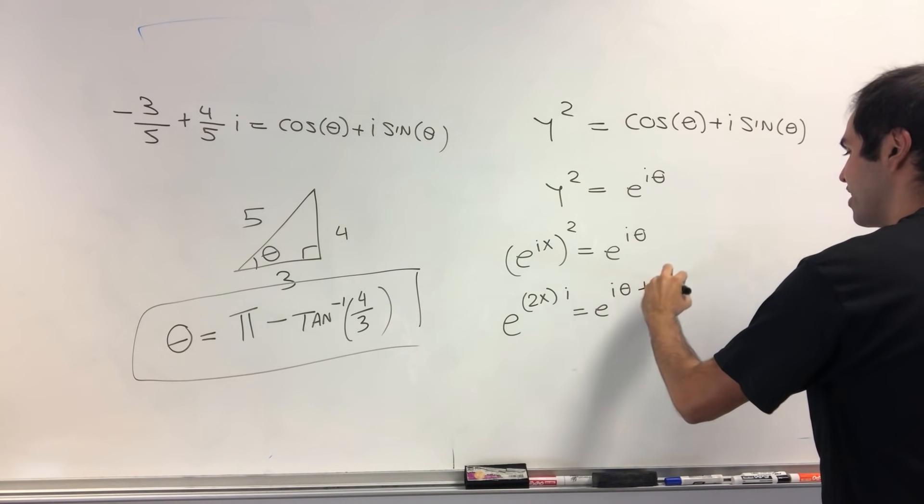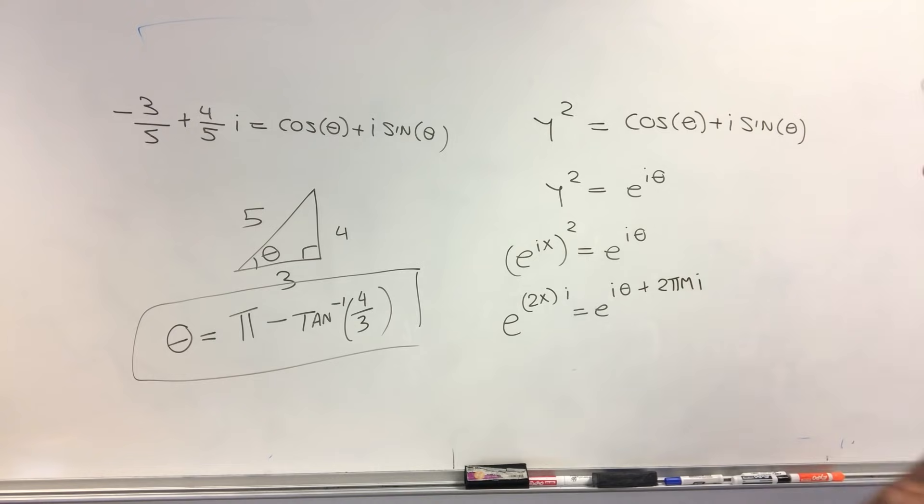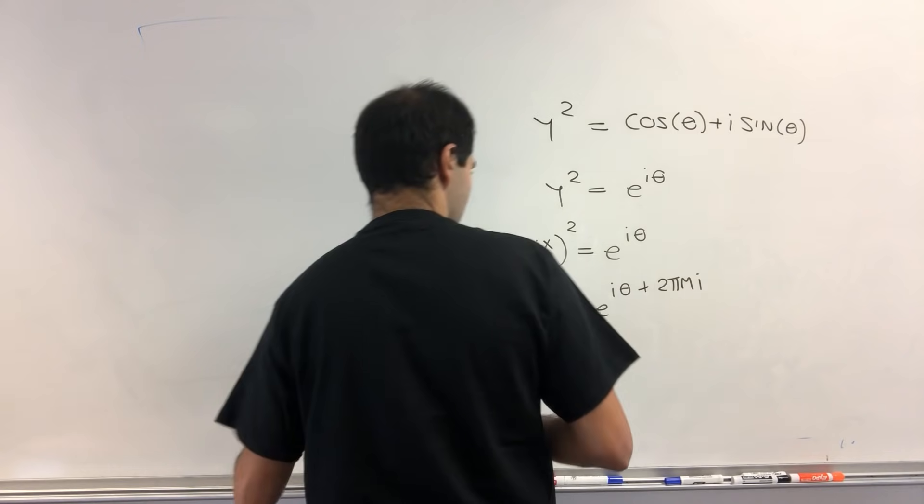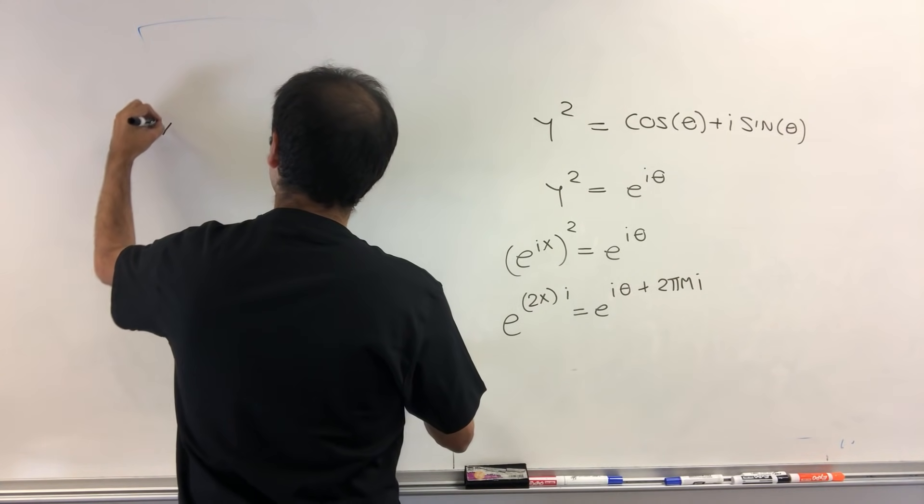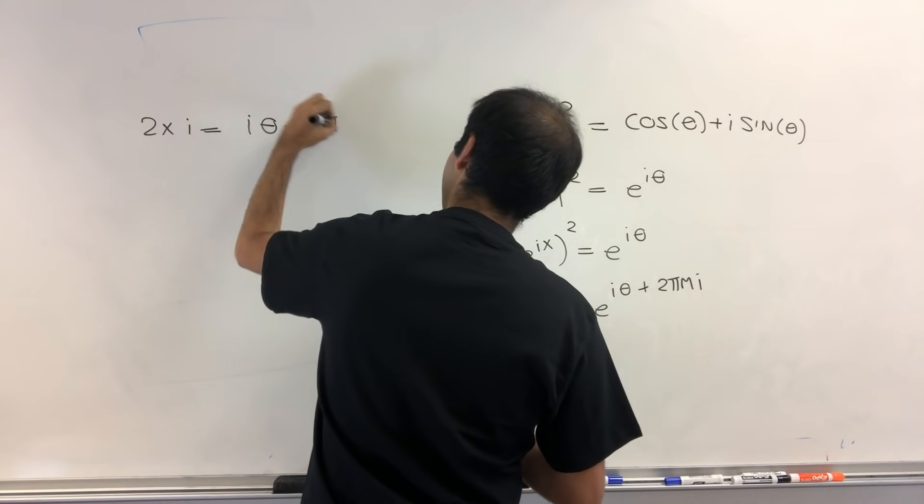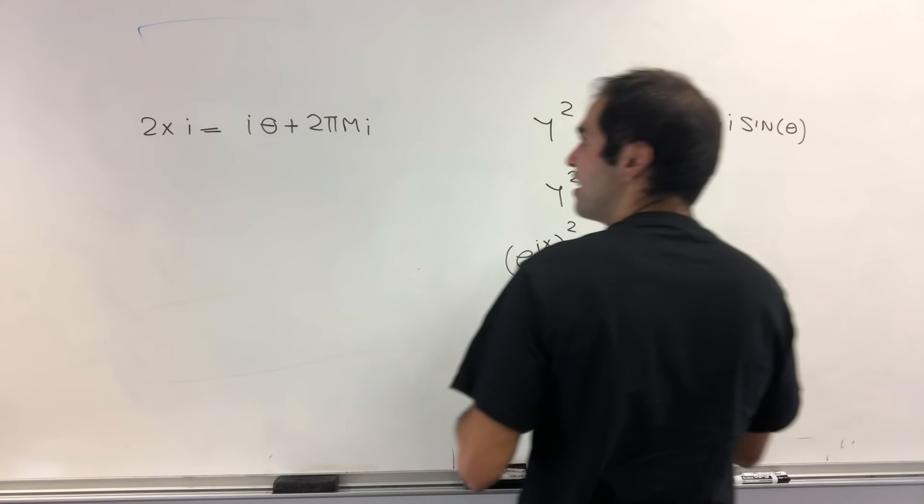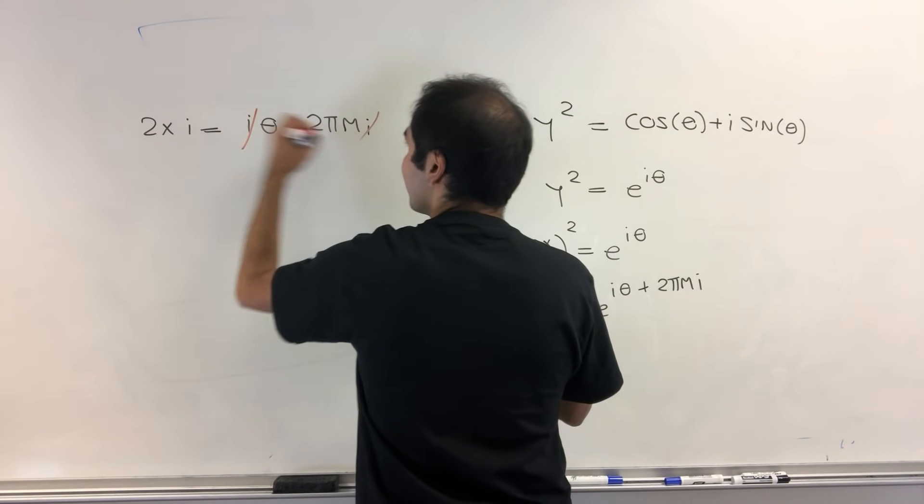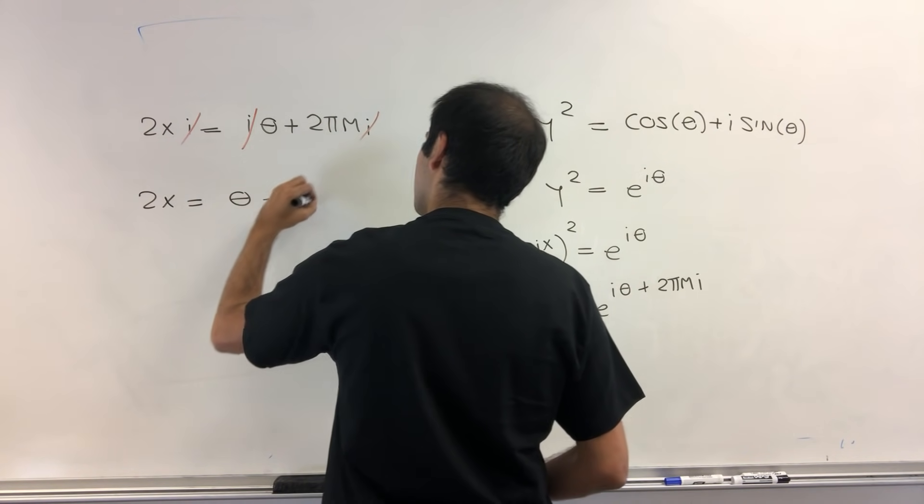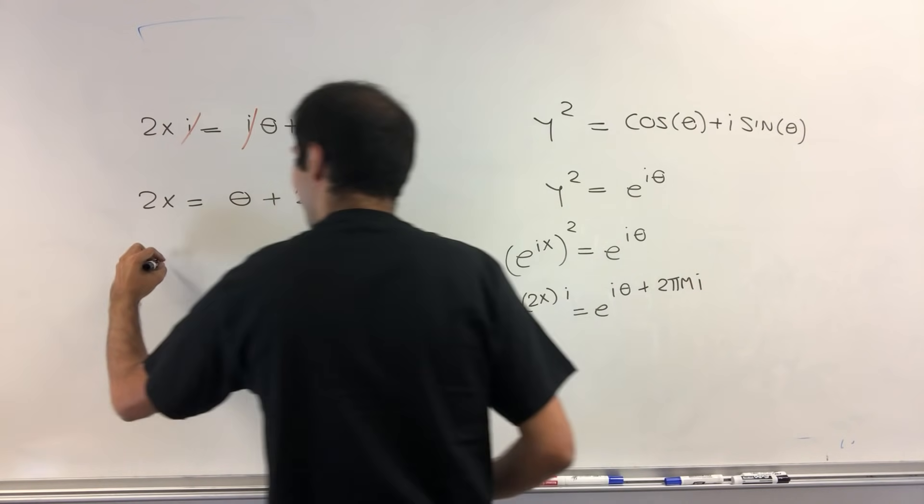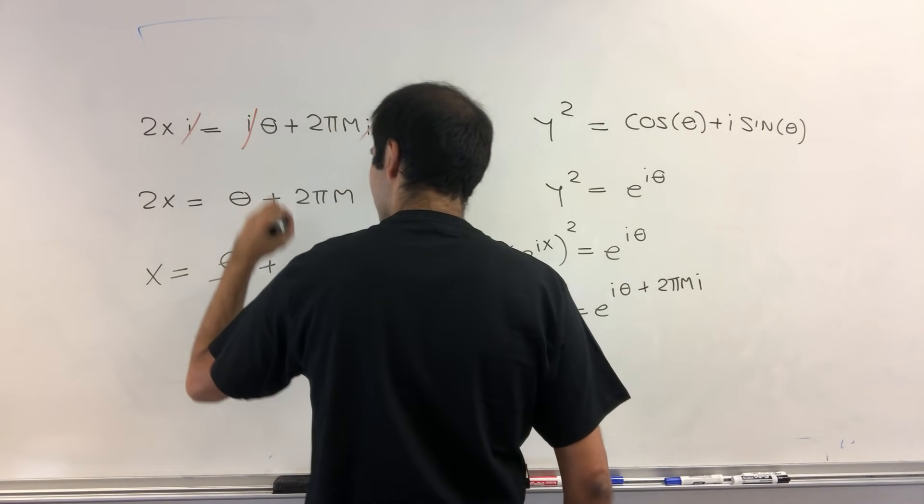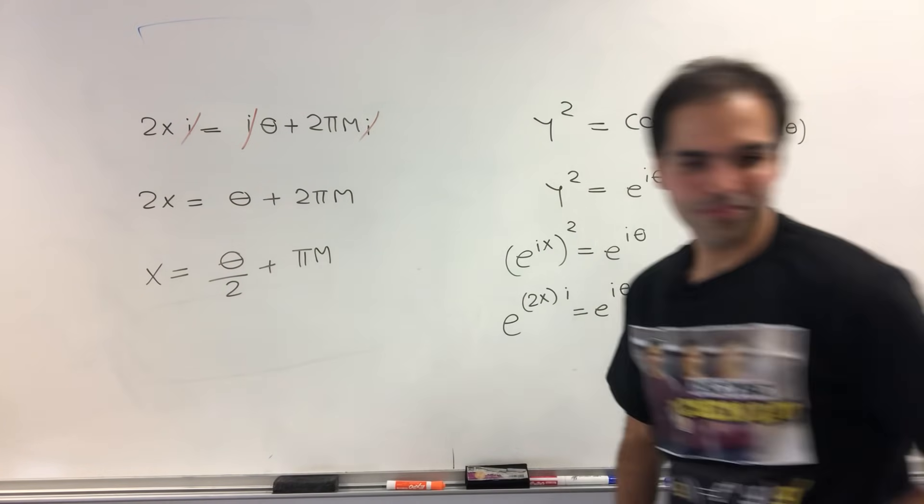And now the nice thing is we can equate the exponents, provided that, remember, we can always add a multiple of 2 pi mi. And so what we get in the end, we just get 2xi equals i theta plus 2 pi mi. And then the i's cancel out. And we get 2x equals theta plus 2 pi m. And then x becomes, again, theta over 2 plus pi n.